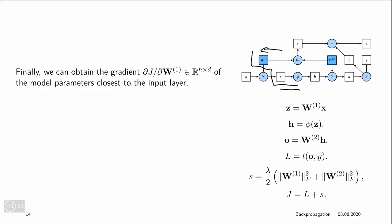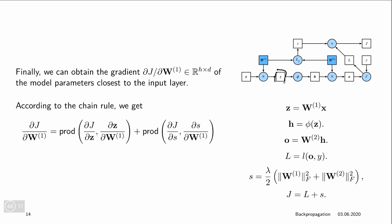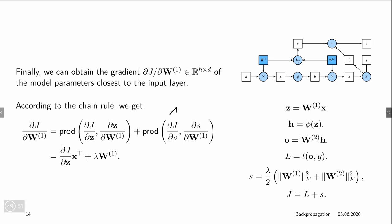Now we have computed all the derivatives up to Z, so we can compute the gradient with respect to W1. D_J/D_W1 equals prod(D_J/D_Z, D_Z/D_W1) plus prod(D_J/D_S, D_S/D_W1). Since Z equals W1 times X, the derivative D_Z/D_W1 gives X^T. And D_S/D_W1 equals lambda*W1. Therefore the full gradient is D_J/D_Z times X^T plus lambda*W1. We have now computed the gradient with respect to both W1 and W2 — all the model parameters.